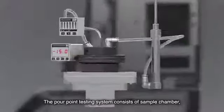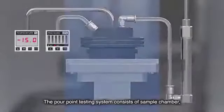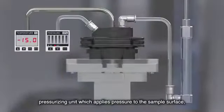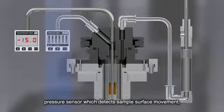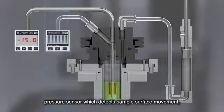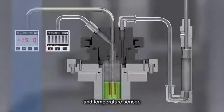The pour point testing system consists of sample chamber, pressurizing unit which applies pressure to the sample surface, pressure sensor which detects the sample surface movement, and temperature sensor.